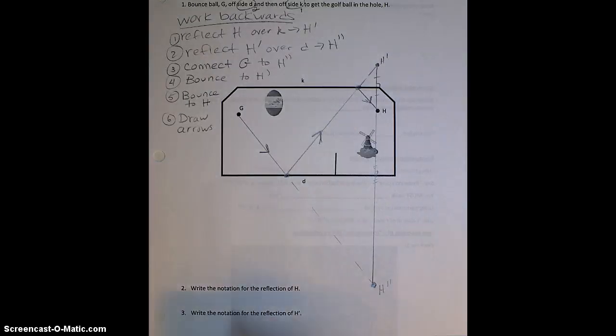Now we want to write the notation for the reflections that we've just done. So remember, the transformation that we're using here is reflections. And we show reflections by using a lowercase r.